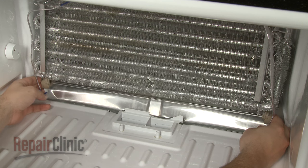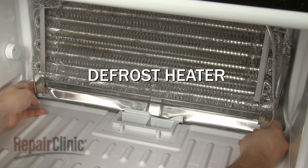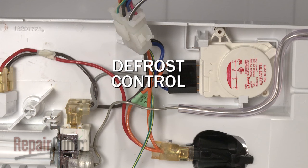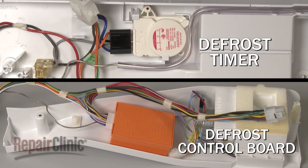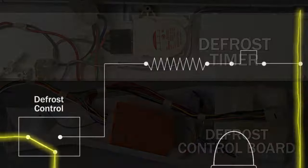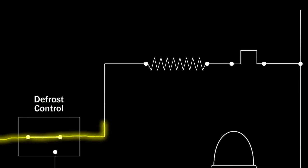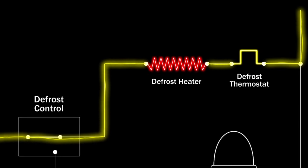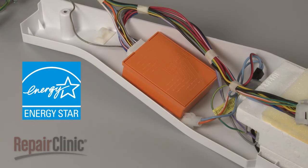The basic components in this system are the defrost heater, the defrost thermostat, and the defrost control. Depending on the model, the control may be a defrost timer or a defrost control board. A defrost timer turns the heater on for about 25 minutes two or three times a day to prevent the evaporator coils from frosting over. A defrost control board will also turn the heater on periodically, but will regulate it more efficiently.